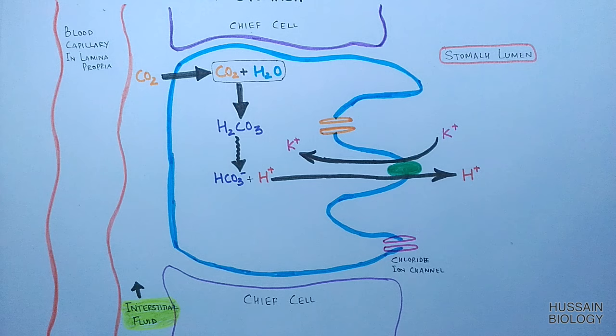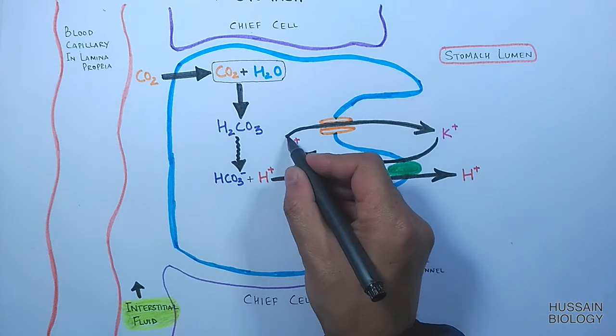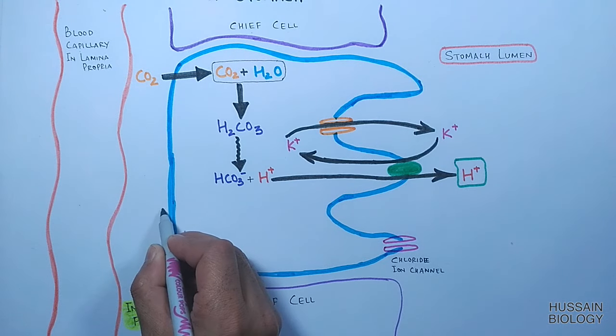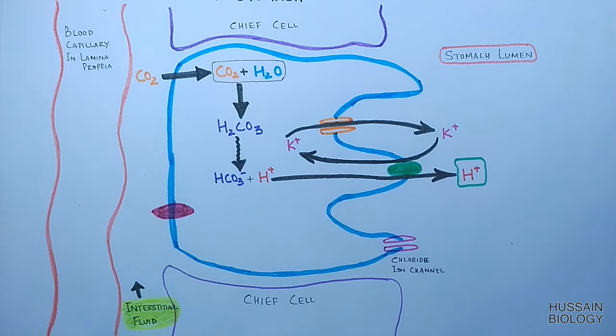The potassium ion inside the parietal cell is sent out through the potassium ion channel, and the ion remains in the cycle. On the basolateral membrane towards the interstitial fluid, the parietal cell has a bicarbonate-chloride antiporter.